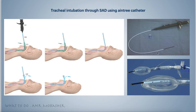Introduce both the bronchoscope and the Aintree catheter through the laryngeal mask until you see the carina. Then take the bronchoscope out, leaving the Aintree catheter inside the airway through the laryngeal mask. Then take the laryngeal mask out, leaving the Aintree catheter alone. We can oxygenate the patient through the Aintree catheter, so there are no worries about that.